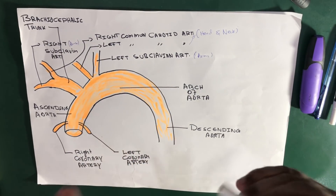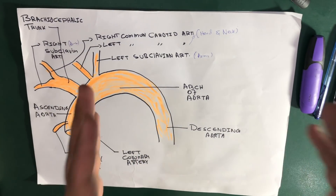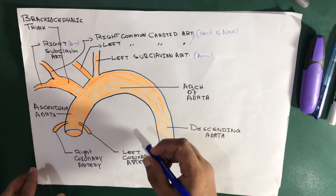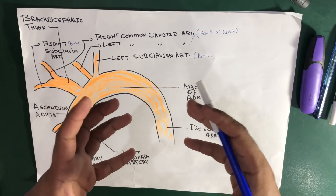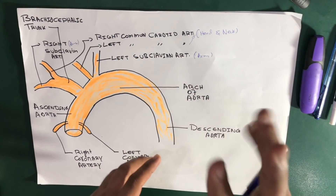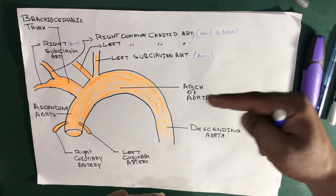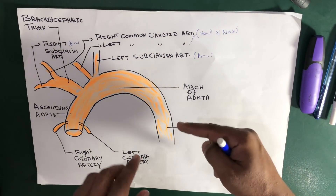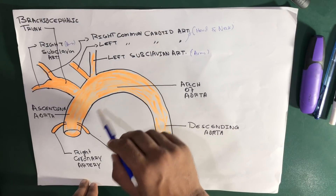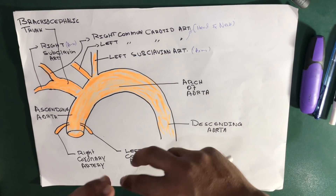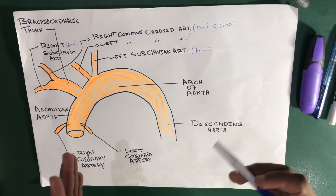The aorta is the largest artery in the body, which begins at the top of the left ventricle. The heart has two ventricles — the right ventricle and the left ventricle — but the aorta begins at the left ventricle. It is actually a tube about a foot long and an inch in diameter.